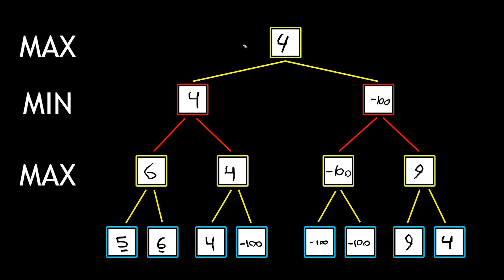So now we have the option, if we choose the left side, we get four, or if we choose the right side, we get negative 100. And as a maximizer player, we would never want to get negative 100 guaranteed. So we will go ahead and say that, okay, the left side produces the best score.